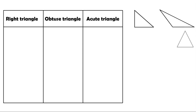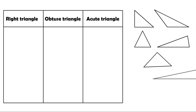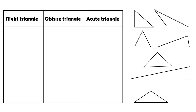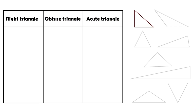Now let's look at the following group of triangles and try to classify them into right, obtuse, or acute triangles. This one is a right triangle, since it has a right angle here.